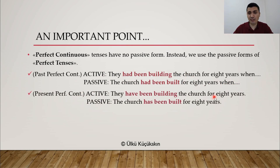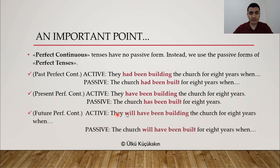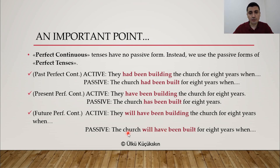'They have been building the church for 8 years' — this is present perfect continuous. Passive: 'The church has been built for 8 years' — this is present perfect passive. And finally, future perfect continuous: 'They will have been building the church.' If you look at this, we already have three helping verbs — three is already too many, so why add another auxiliary? The sentence would look terrible. So we simply have 'The church will have been built' — this is future perfect passive, not continuous.